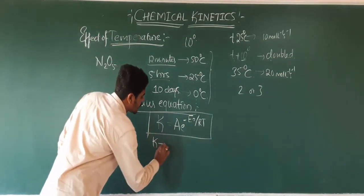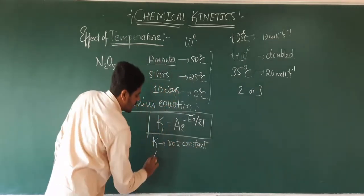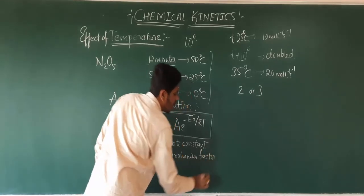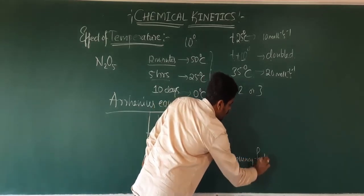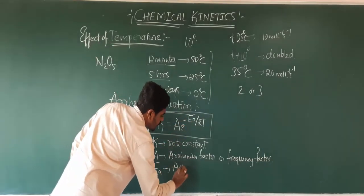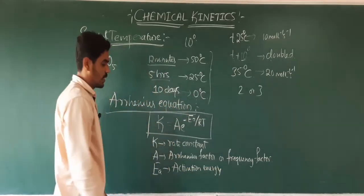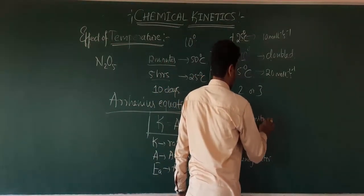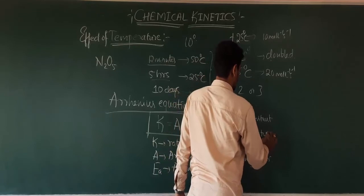In the Arrhenius equation, K is the rate constant, which indicates the rate of reaction. A is the Arrhenius factor, also known as the frequency factor. Ea is the activation energy. R is the gas constant, and T is the temperature.